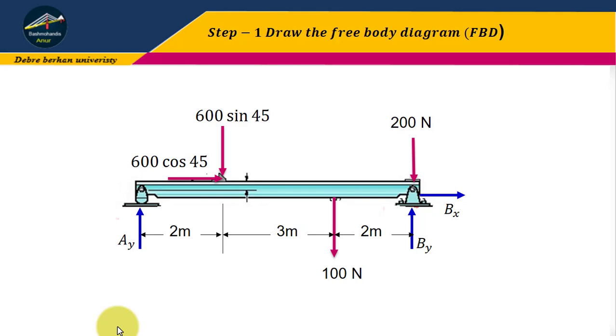This is the first step: the free body diagram. In the free body diagram, we include all the support reactions, all the unknown reactions, all the dimensions, and resolve any inclined forces into X and Y components. This diagram is very clear. Now we can apply the principle of equilibrium equations and determine Ay, By, and Bx.